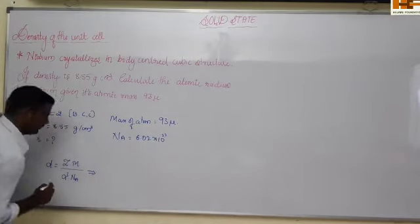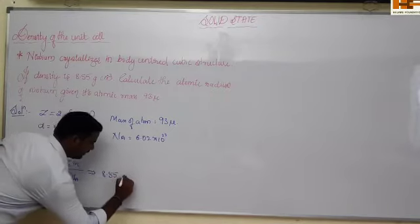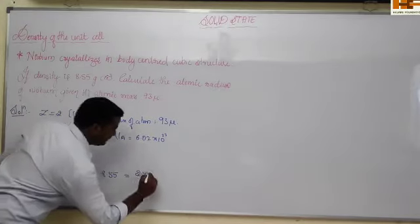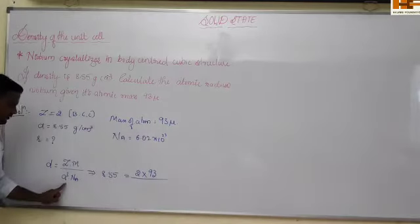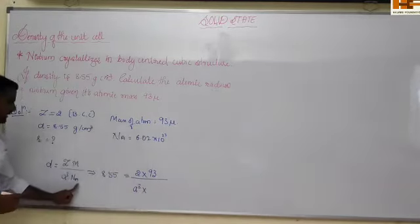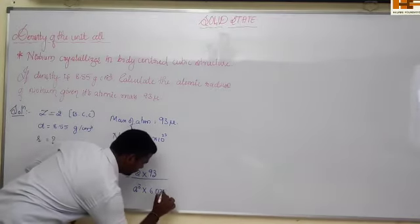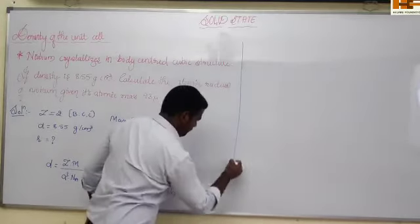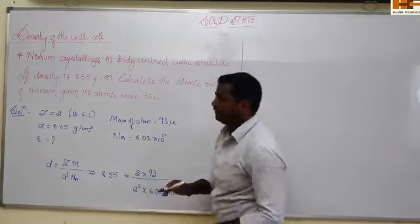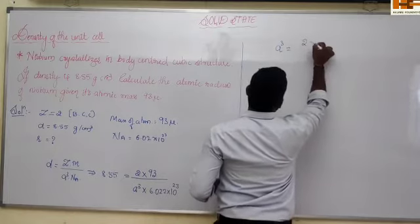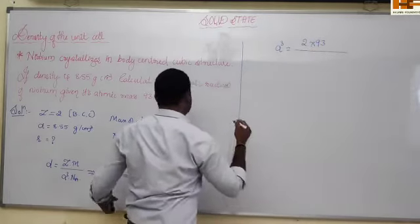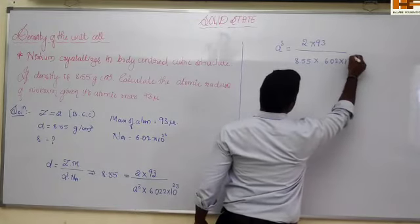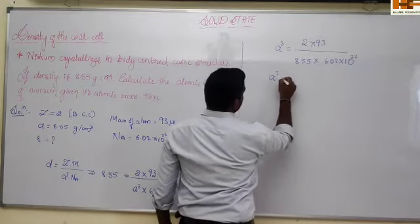Rearranging: a³ = 2 × 93 / (8.55 × 6.022 × 10²³). Simplifying this gives a³ = 36.12 × 10⁻²⁴ cm³.